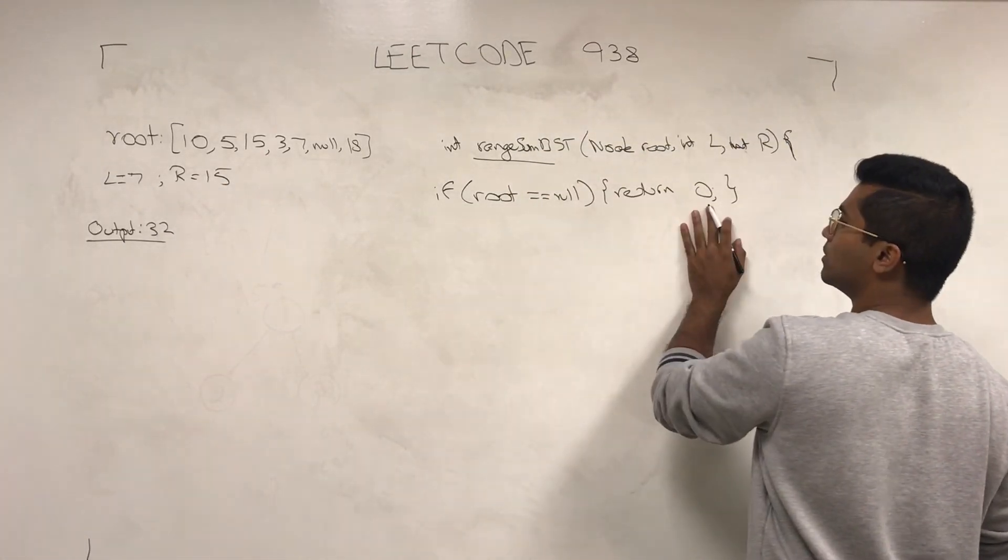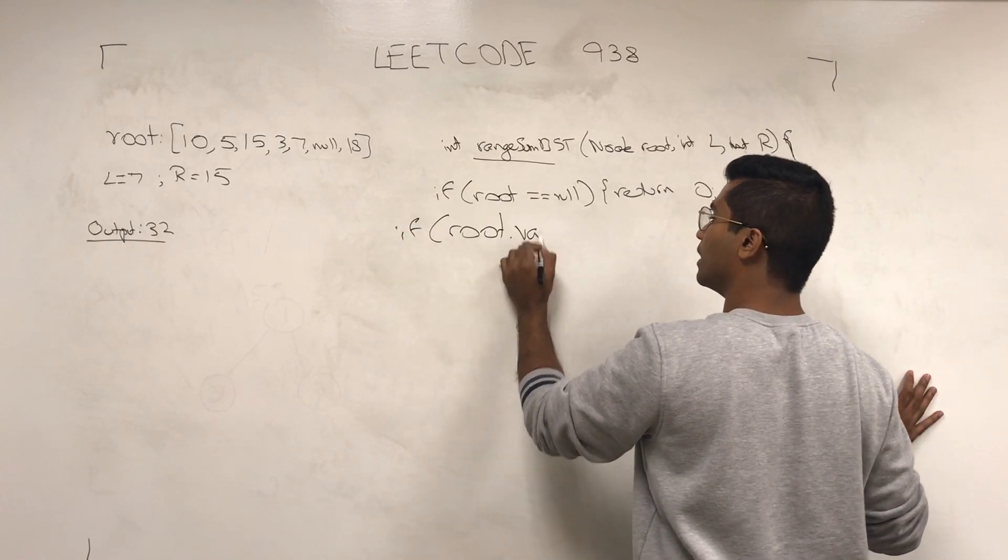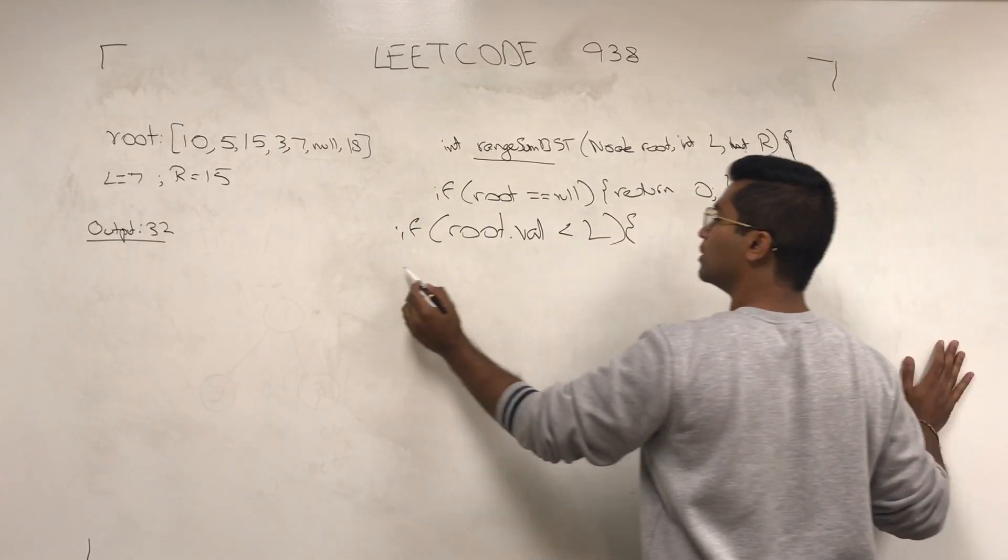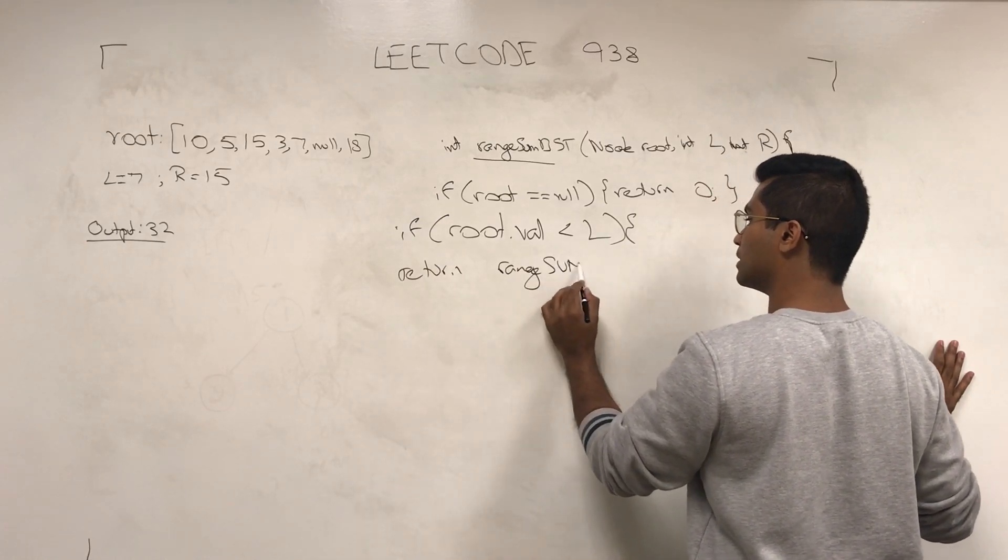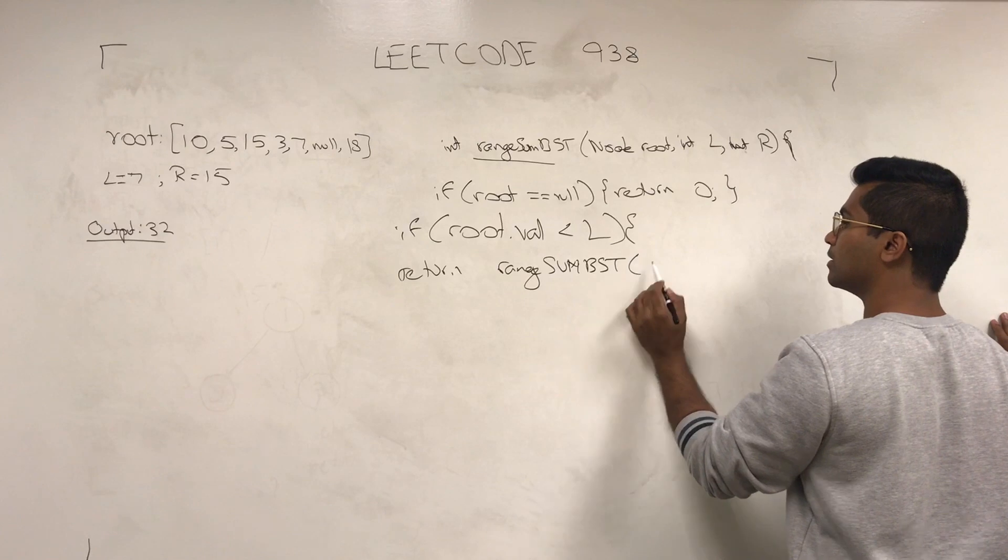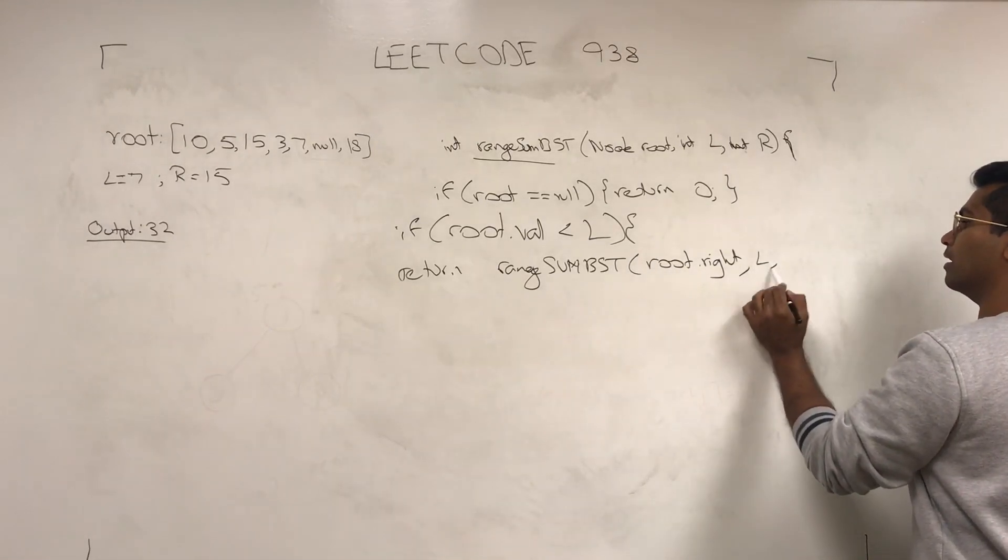So if root is null, we return zero. If root's value is less than L, we return range sum root.right, and L comma R.